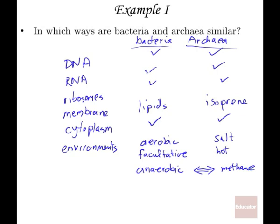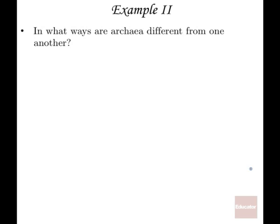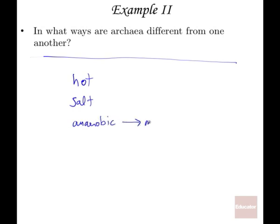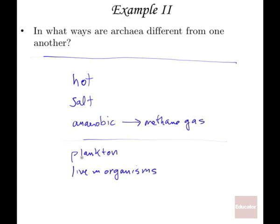Our next question is: in what ways are archaea different from one another? As we continue to study archaea, we will learn more and more ways they differ. At this early stage, the only things we really know about these organisms are essentially the environments they live in — hot environments, high-salt environments, anaerobic environments — and that they can produce methane gas. They may also end up living in plankton and in organisms, but this is all subject to discovery.